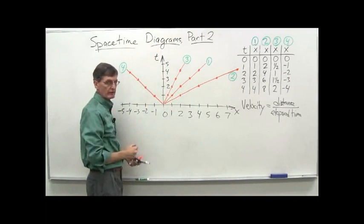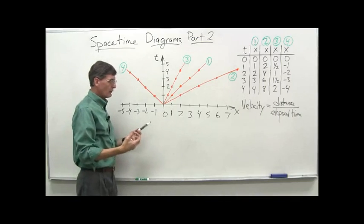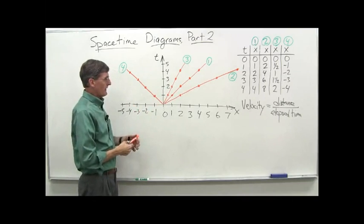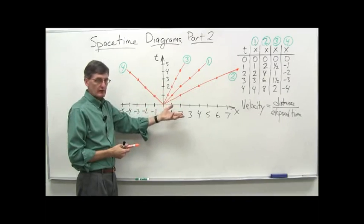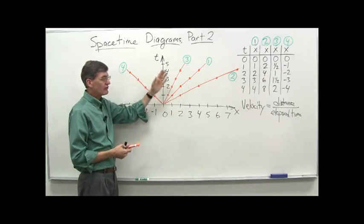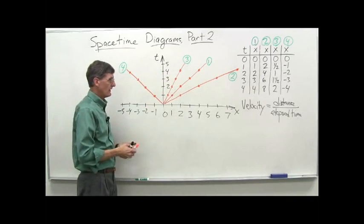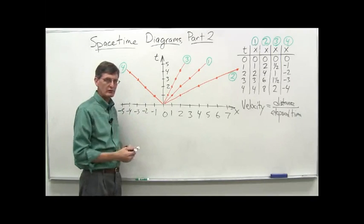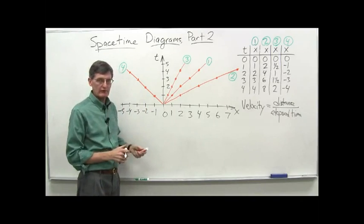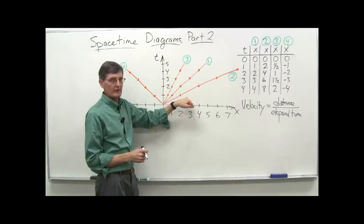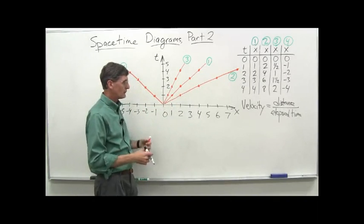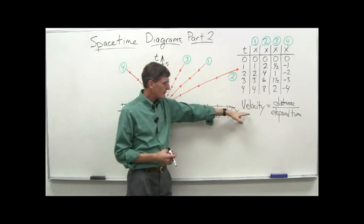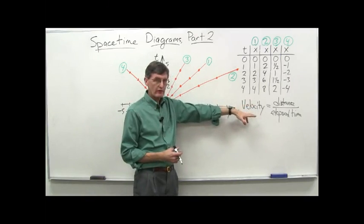What's the key point here? Let's relate the velocity to the slope of these lines. Velocity is distance divided by time, essentially. Let's look at example number two.